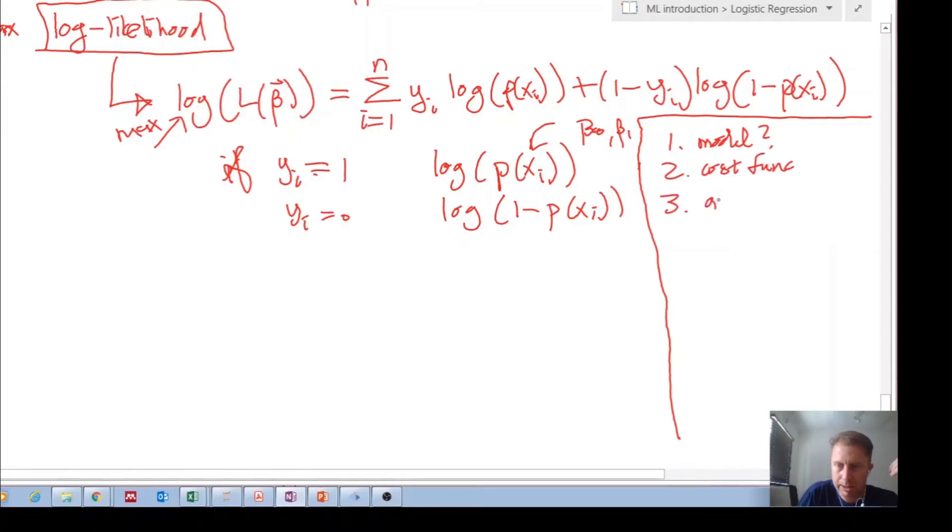Okay, so I just want to recap. In logistic regression, the model that we use is 1 over 1 plus e to the minus β0 plus β1x. And remember, this is just for a simple one input feature.